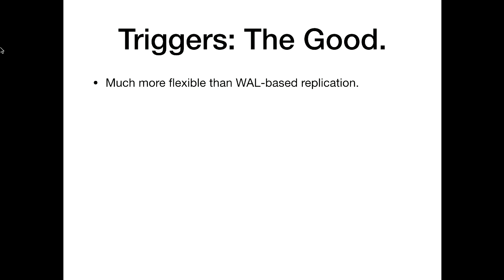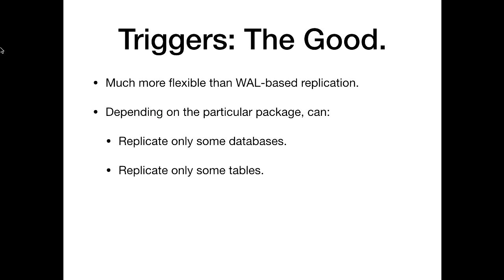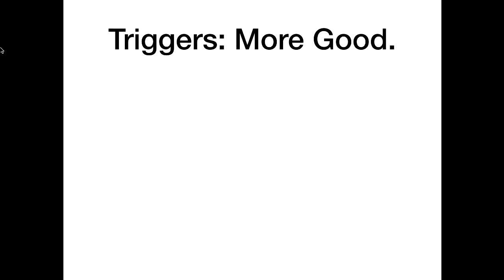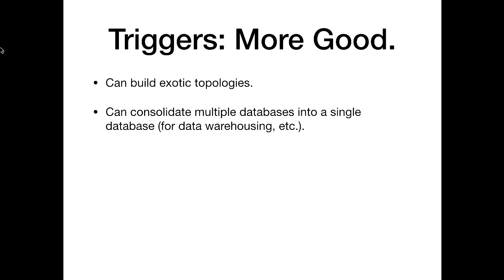The good part about this is a lot more flexibility — it's just code and it can do whatever you want. Depending on the package, you can replicate only some databases, only some tables, only some fields, and filter changes with rules — like 'I only want to replicate based on this predicate, a WHERE clause.' You can build really exotic topologies, merge things, and consolidate databases. Bucardo, unique among these, does multi-master replication — you can have two databases replicating the same table schema to each other, which is handy for geographically distributed systems. And it will work between different major versions of Postgres, so you can use it for near-zero downtime upgrading.